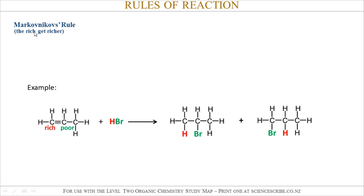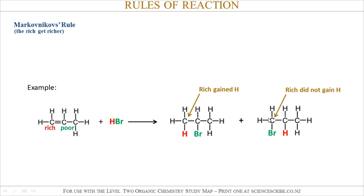To do that, you might remember the rule as 'rich get richer.' When I look at my first alkene, I have to consider which carbon atom is richer. You can think of hydrogen like money. This carbon atom here is richer because it has two hydrogen atoms, and this carbon atom is poor because it only has one hydrogen atom. In this first example, the rich gains another H — so it got richer. In the second example, this carbon atom didn't gain an H, so the rich did not get richer. So this first example is the major product, which means the other one must be the minor product.